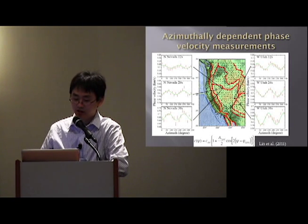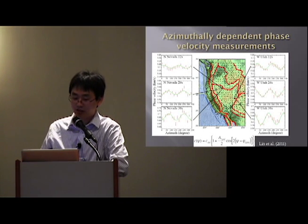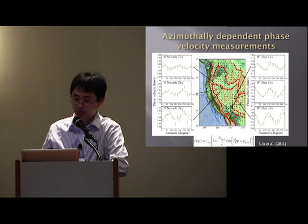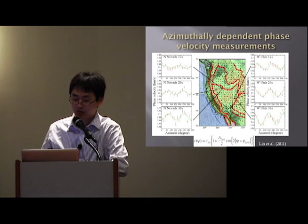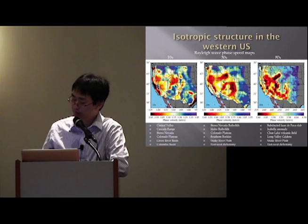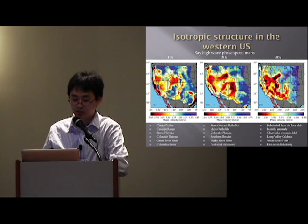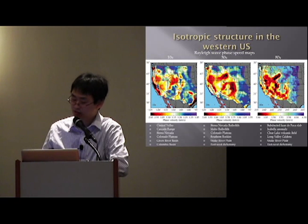Although we can measure the propagation of surface waves coming from all directions, we can now determine for each location, each period, and each direction a phase-velocity measurement. You can see that for different azimuths at a particular location, for different periods, they all show some variation depending on the azimuth of the incoming wave. This allows us not only to measure isotropic structure, but also anisotropic structure. Isotropic structure is the mean of this sinusoidal function, and anisotropy can be derived from the variation of that function.